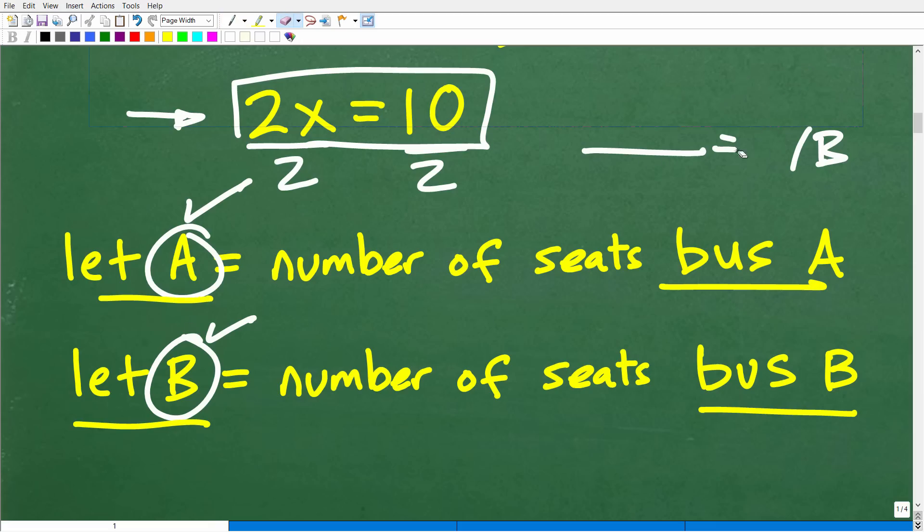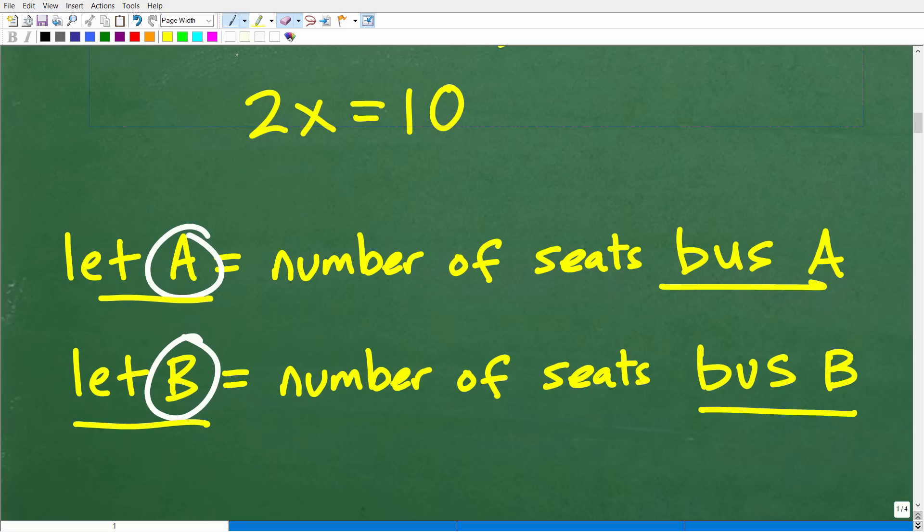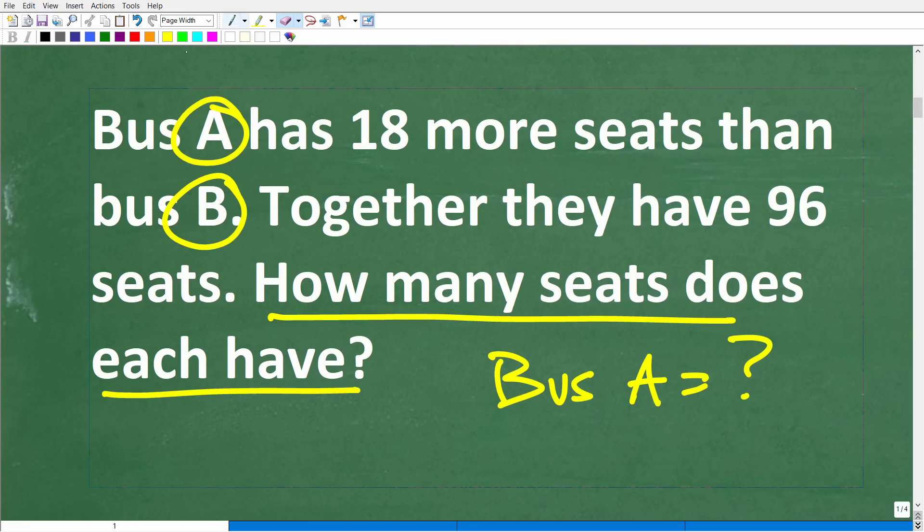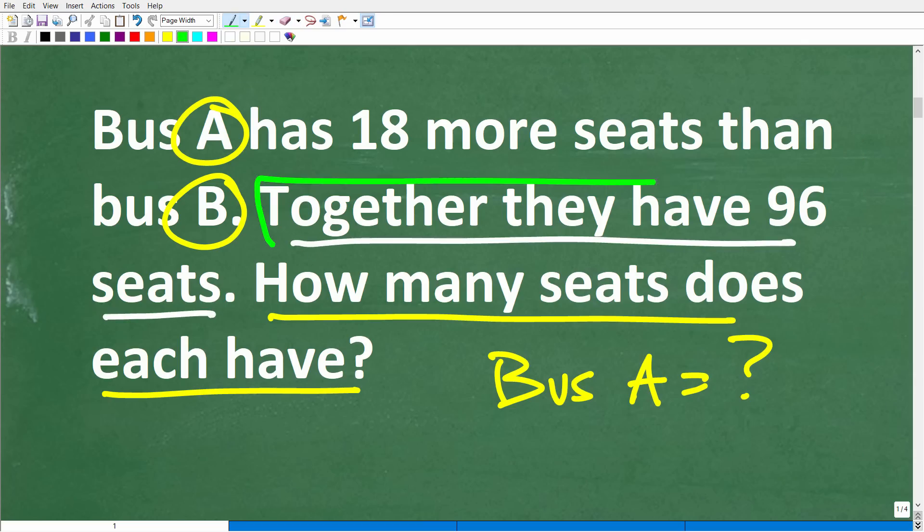So this is what we call a system of equations. This is a big topic in algebra. So again, we have two variables, so we're going to need two equations. We can't solve for A or B unless we have two equations. So we need to construct two equations that involve both A and B. So how can we do that? Well, we need to go back to the problem. Together, they have 96 seats. So can you think of an equation that we can write that involves both A and B? Together, they have 96 seats.